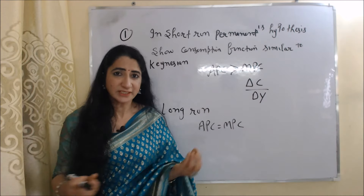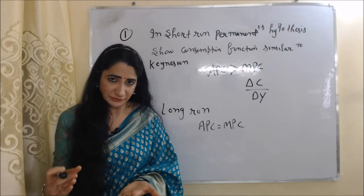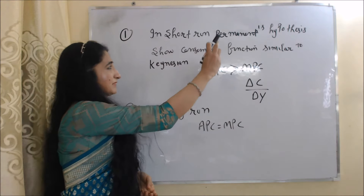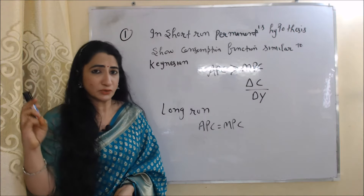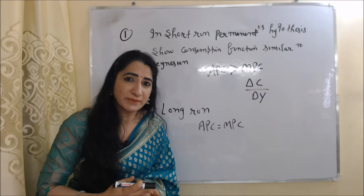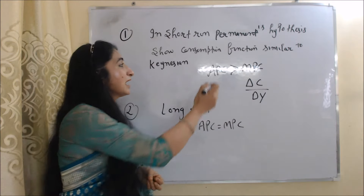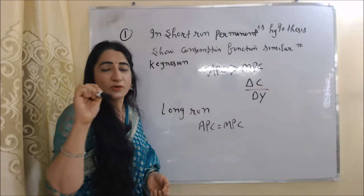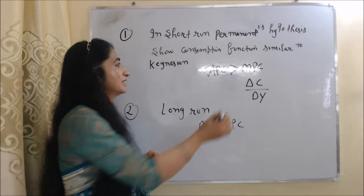There are two important things to remember about the permanent income hypothesis. First, in the short run, the permanent income hypothesis shows a consumption function similar to Keynesian theory. According to permanent income hypothesis, in the short time period, MPC will be less than APC.